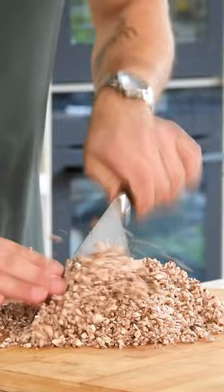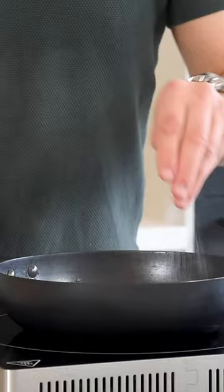Now glaze your shallot in a splash of oil and add your mushrooms and fry till golden with some salt and the thyme leaves.